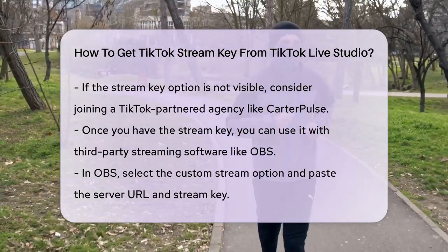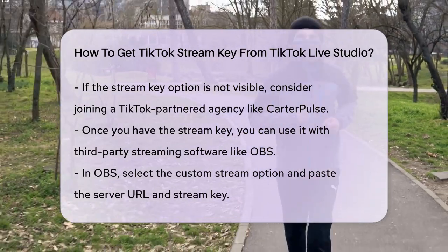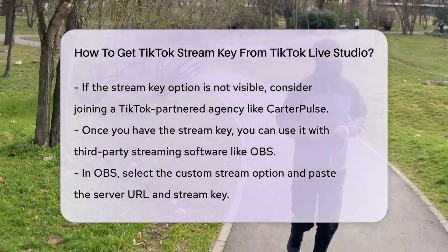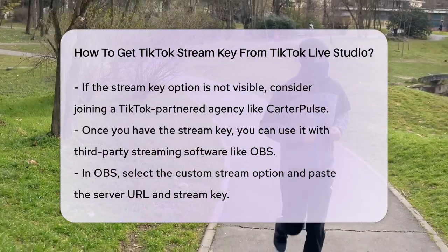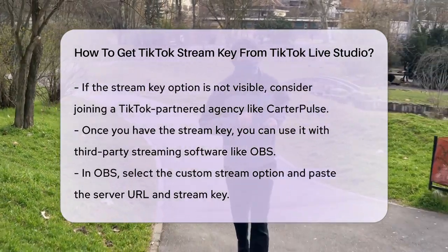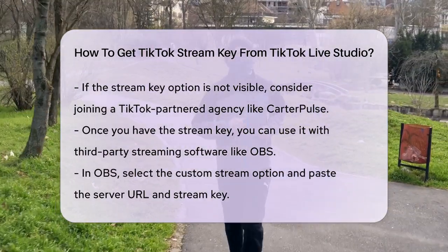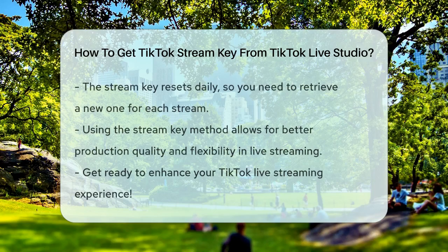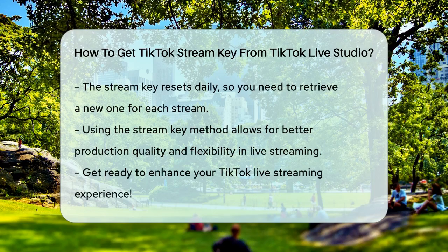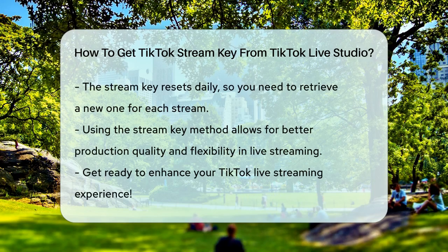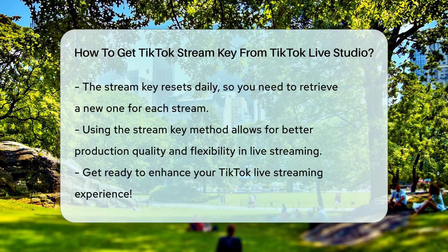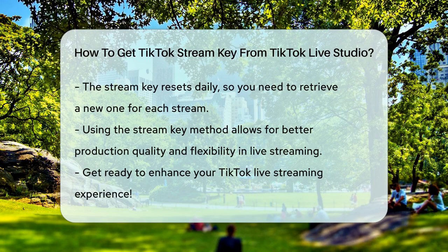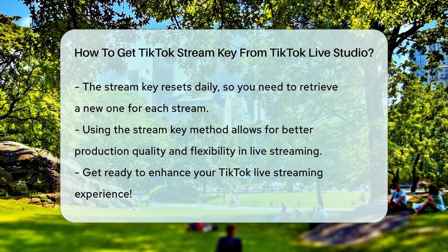Once you have your stream key, you can use it with third-party streaming software like OBS. Simply go to your OBS settings, select the Custom Stream option, and paste the server URL and stream key into the respective boxes, and you're ready to start streaming.